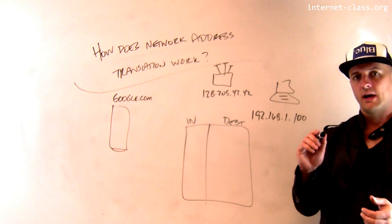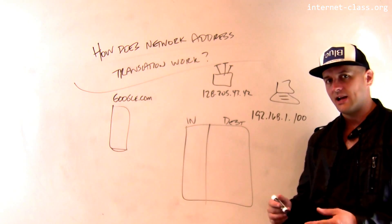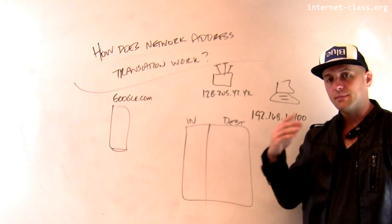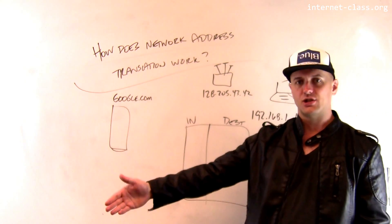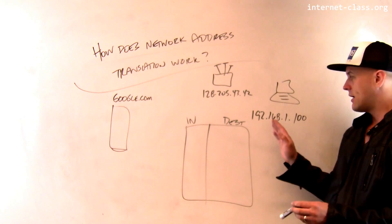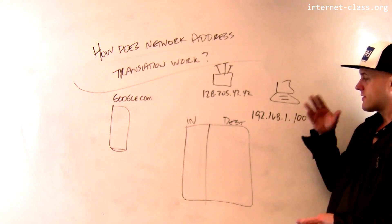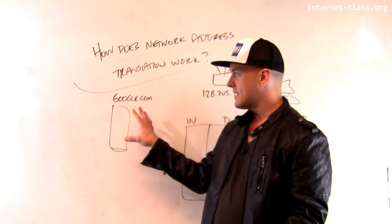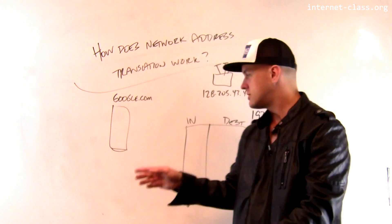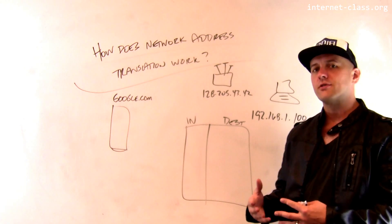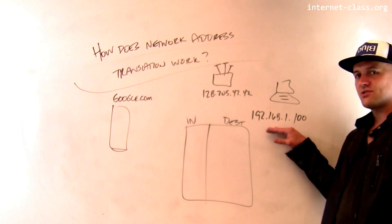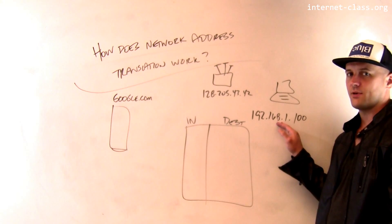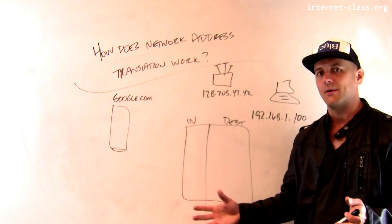How does network address translation work? Network address translation is designed to allow computers with private IP addresses to communicate and initiate connections with the rest of the Internet. Remember, these private IP addresses — here's an example: 192.168.1.100. If you start trying to send a packet somewhere on the Internet to this address, a router is going to reject it. This address is listed as unroutable, so any traffic destined for this address on the broader Internet is immediately dropped.